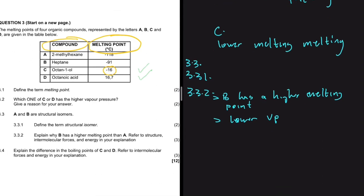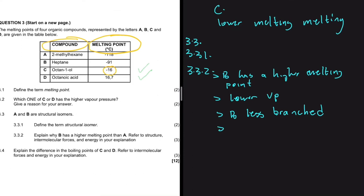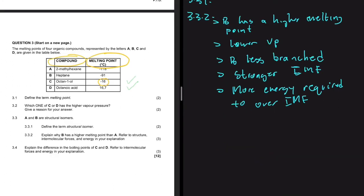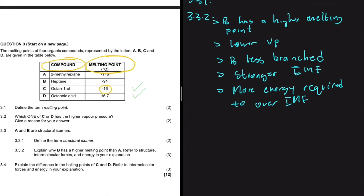We need to explain why B has lower vapor pressure. The difference between A and B is that B is less branched — B is a straight alkane while A is a branched alkane. If B is less branched, that means it has stronger intermolecular forces. Stronger IMF means more energy is required to overcome them, which accounts for the higher melting point of compound B.